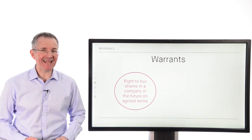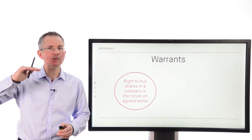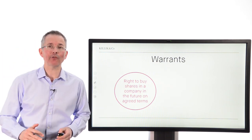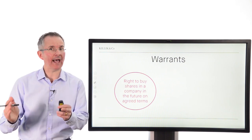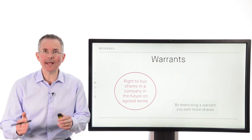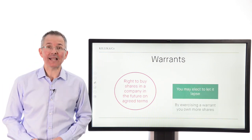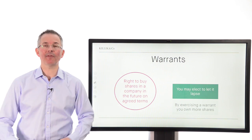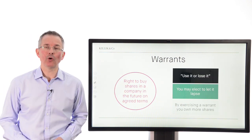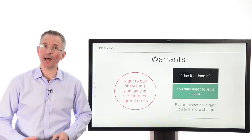Warrants: the right to buy shares in a company at a future date on specified terms. Normally a warrant sets a fixed price at which you can buy shares at a future date, and if that fixed price is below the market price when you exercise the warrant, you could make an almost immediate gain. By exercising a warrant you'll own more shares and pay the warrant strike price. You may also elect to let the warrant lapse — for example if the share price is below the warrant price — but it's a use-it-or-lose-it deal, so eventually the warrant simply expires.